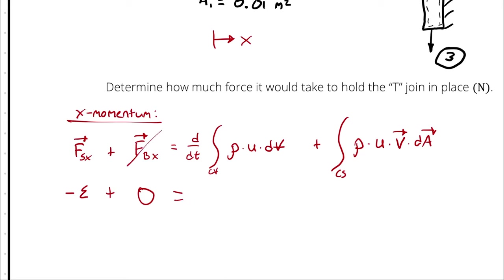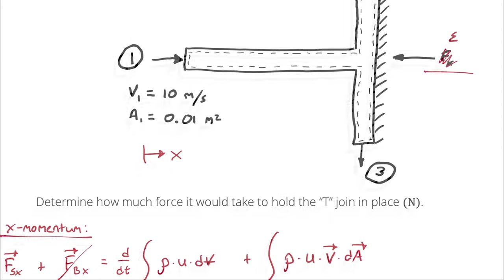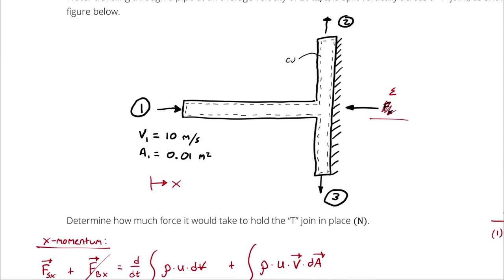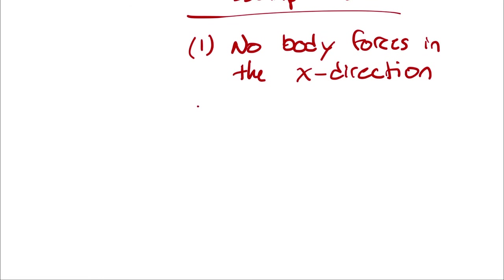Then I can consider if I need to account for any changes in the control volume with respect to time. If I have steady state analysis, remember that that entire term disappears. Do you think it's reasonable to treat this situation as steady state? I do, at which point that entire term disappears.